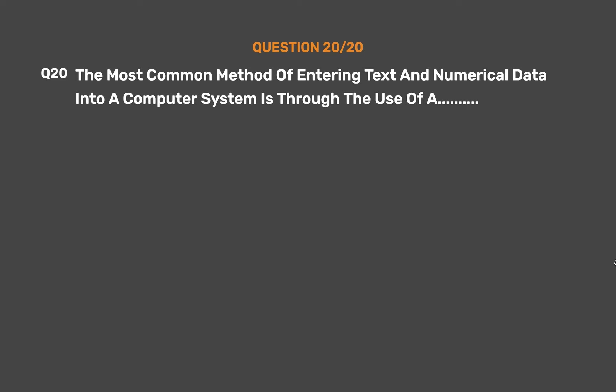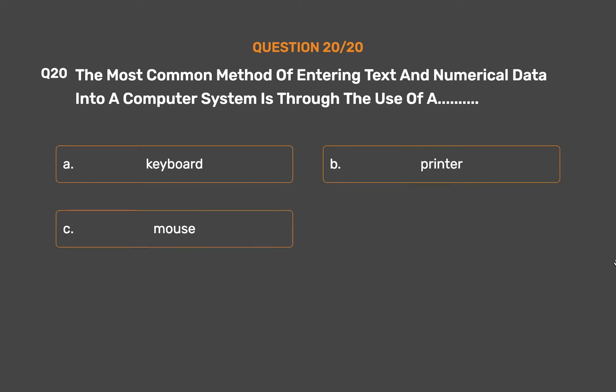Question number 20. The most common method of entering text and numerical data into a computer system is through the use of: Option A: Keyboard. Option B: Printer. Option C: Mouse. Option D: Cursor.